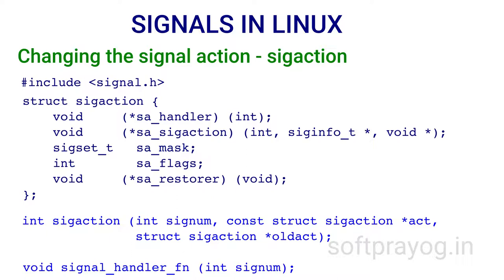The member SA_Mask is a set of signals that need to be blocked — signals specified in SA_Mask are added to the signal mask of the thread during handler execution. The signal signum is also blocked and added to the signal mask of the thread. However, if SA_NODEFER is specified in SA_FLAGS, the signal for which the handler is being installed is not blocked during handler execution. After the execution of the signal handler, the thread's original mask is restored.